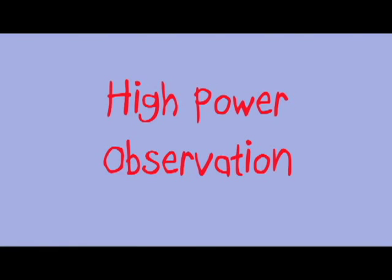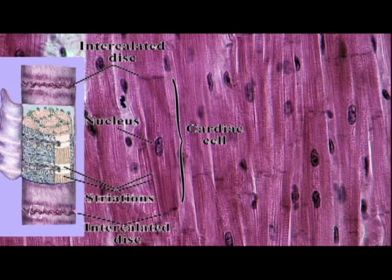High power observation shows the detail of the cells. This workbook illustration is compared to a labeled cell that clearly shows striations, a single centrally located nucleus, and intercalated disc. The gap junctions located in the intercalated disc allow the heart to work as a unit, propagating the waves by electrolyte movement for the heartbeat.